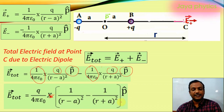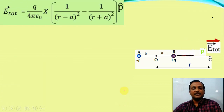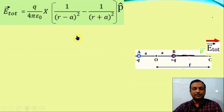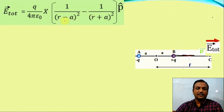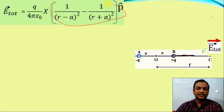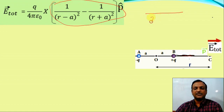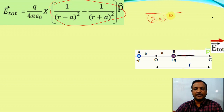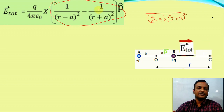Taking LCM of (r minus a) whole square and (r plus a) whole square, the numerator becomes q over 4πε₀ times the expression with terms 1 by (r minus a)² minus 1 by (r plus a)². After taking LCM and simplifying the numerator, we get the difference of the fractions.